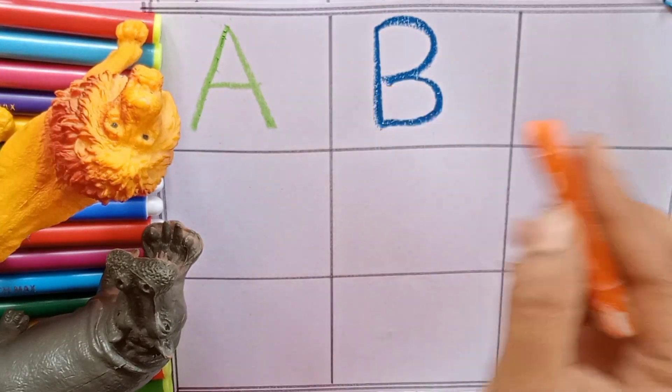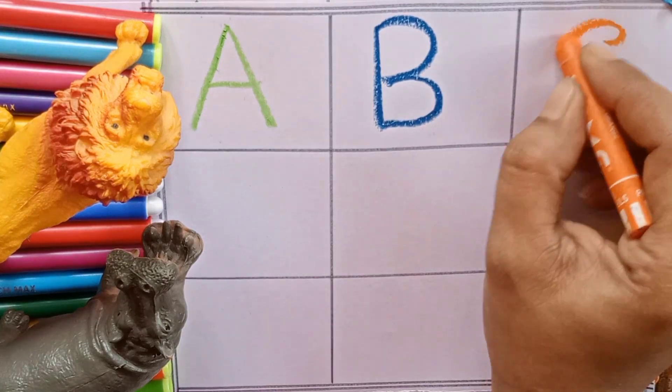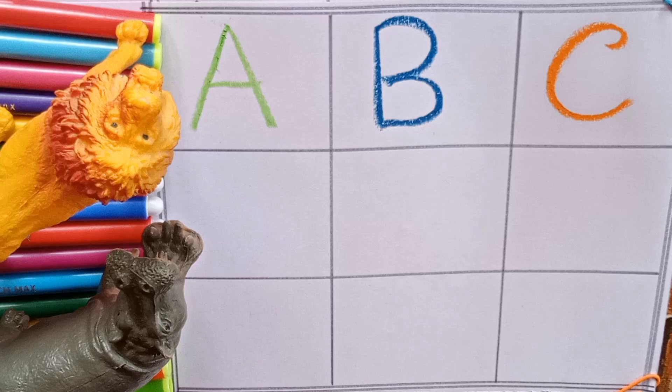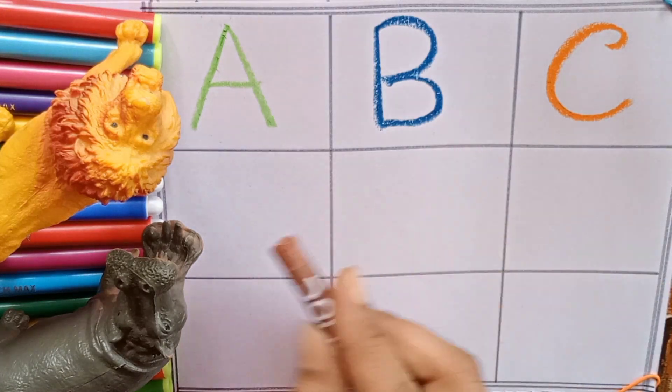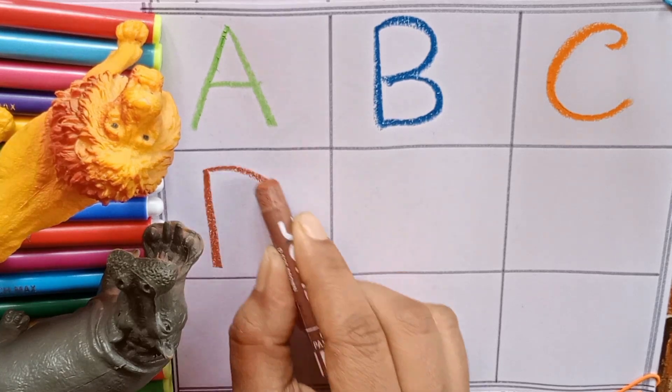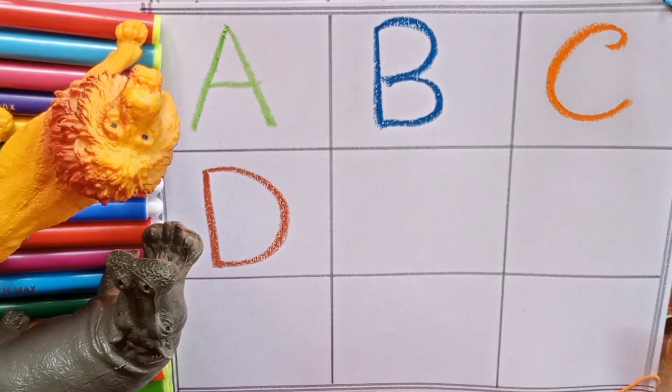Our third color is orange. C. C for cow. C for also camel. Our fourth color is brown. D. D for donkey. Donkey is an animal. D for also door.